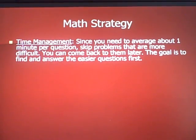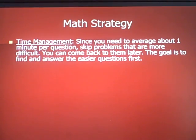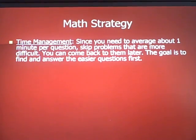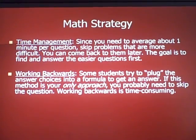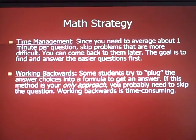On time management: going back to the format of the test, since you need an average of one minute per question, skip the problems that are more difficult and come back to them later. The goal is to find and answer the easiest questions first. This is useful throughout the ACT but is particularly important in the math section. Many students try to plug answer choices and work backwards on difficult questions, but if that's your only approach, it's likely taking too much time — so skip it and come back.